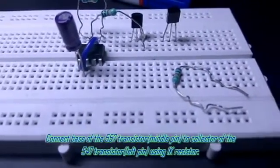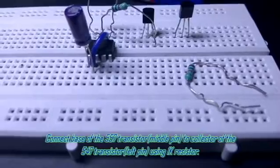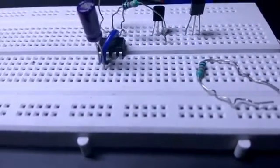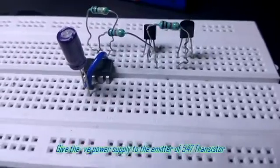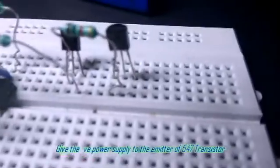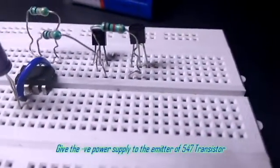Now connect the emitter of the NPN transistor, that is the BC 547 transistor, to negative.